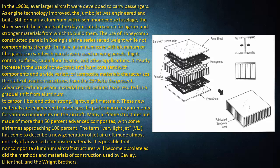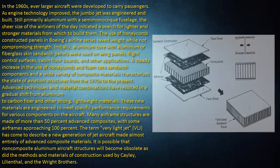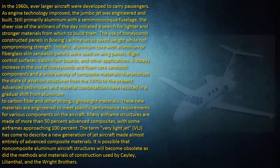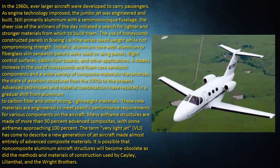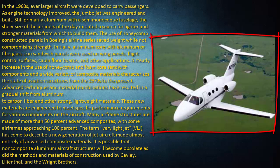Many airframe structures are made of more than 50% advanced composites, with some airframes approaching 100%. The term Very Light Jet, or VLJ, has come to describe a new generation of jet aircraft made almost entirely of advanced composite materials. It is possible that non-composite aluminum aircraft structures will become obsolete, as did the methods and materials of construction used by Cayley, Lilienthal, and the Wright brothers.